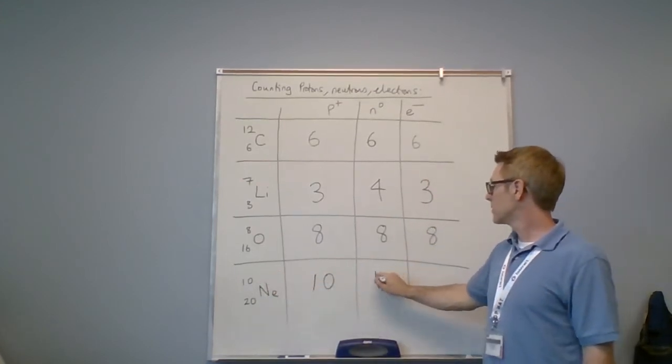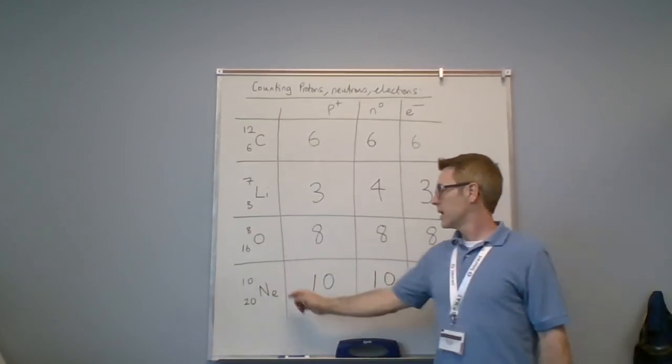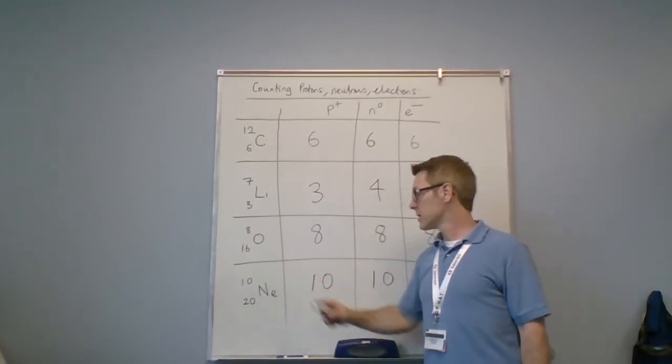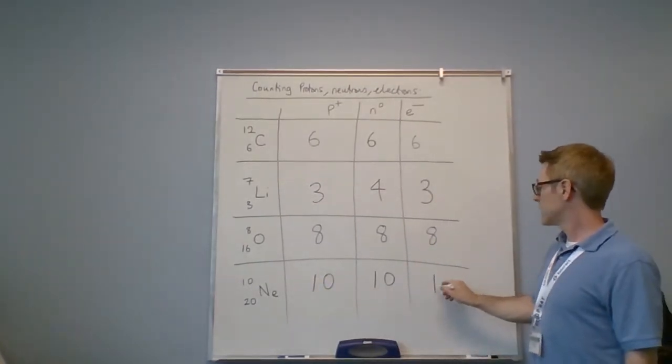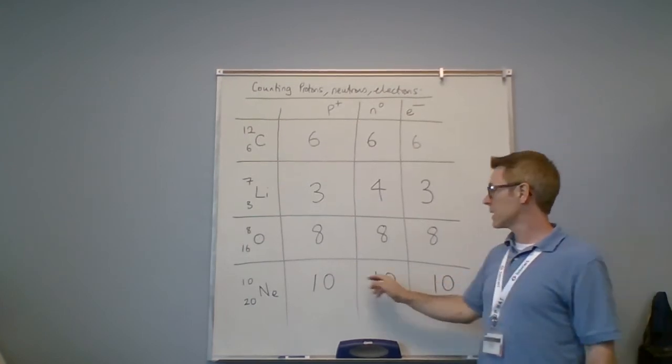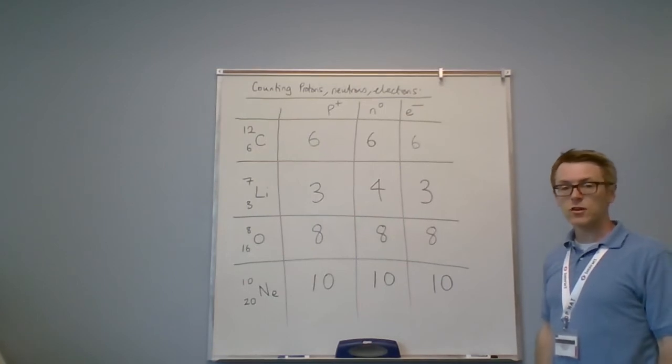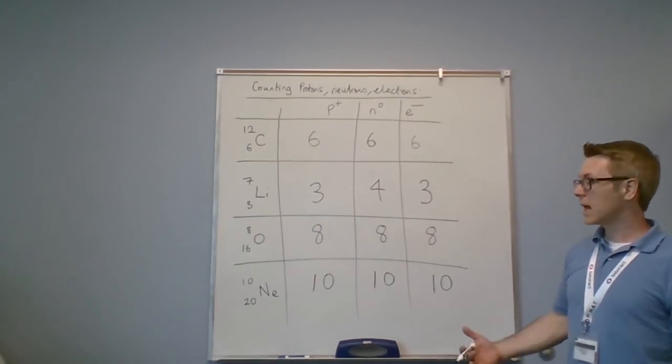It's neutral—there's no available charge, so there must be 10 electrons to counterbalance the 10 protons. So this is how you count protons, neutrons, and electrons for any element.